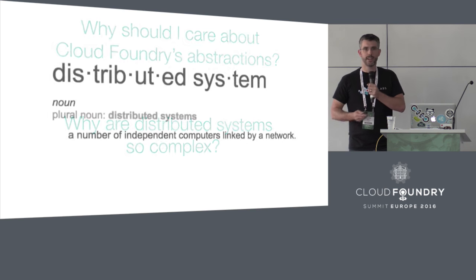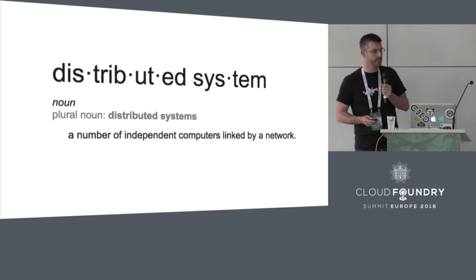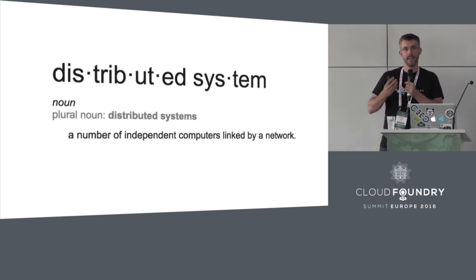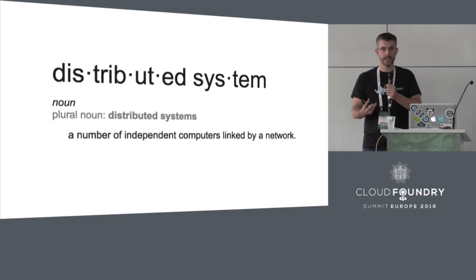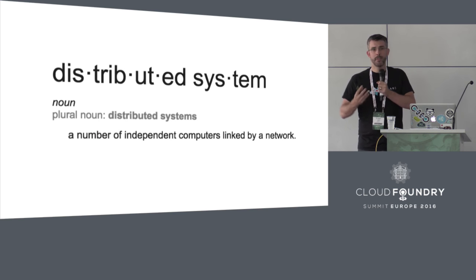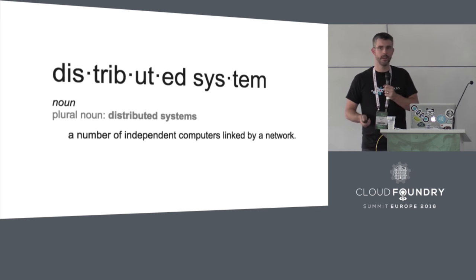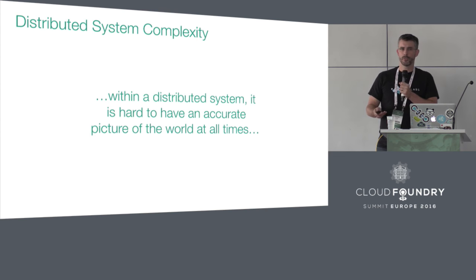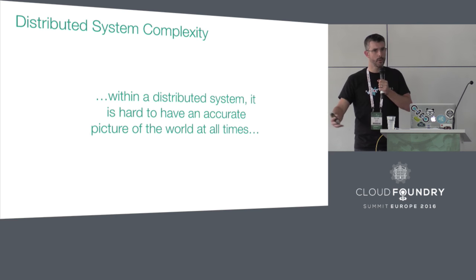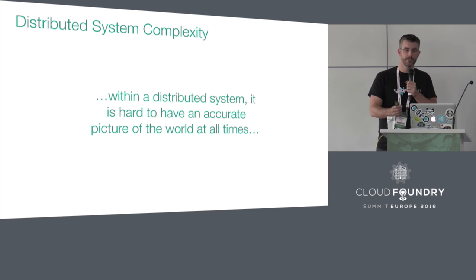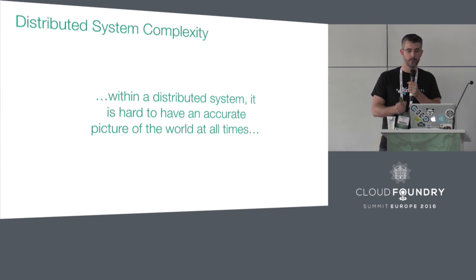To answer this, you need to understand the context of another question: why is a distributed system so hard in the first place? To level set, in case anyone is completely new to this stuff — distributed systems involve a number of components that are networked or connected together. Because there are many moving parts, they become inherently complex because you need to orchestrate them. Halfway through Onzi's original talk, he made this comment that within a distributed system, it's hard to have an accurate picture of the world at all times.